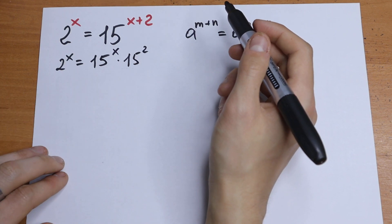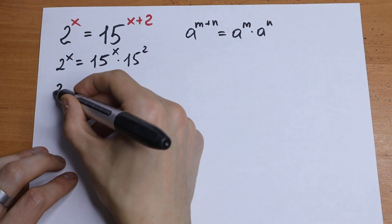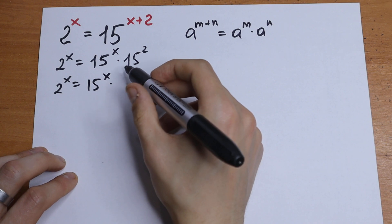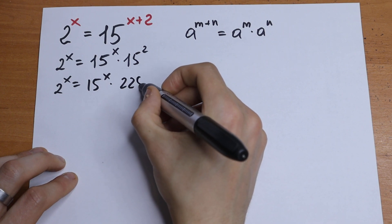For sure we can calculate this 15 square, so let's do this. 2 to the power x equal to 15 to the power x times 15 square, 225.